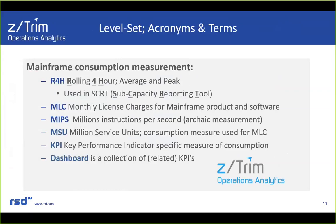Before the demo, let's go through a few acronyms and terms to make sure we're talking the same language. The rolling four-hour average is a measure of a four-hour period on the system about consumption during that period. Billing and monthly licensing charges are based largely on the rolling four-hour average. That rolling four-hour average is key because it's used in the subcapacity reporting tool, which is required to run monthly and submit to IBM for them to calculate your monthly licensing charges based on your agreement.